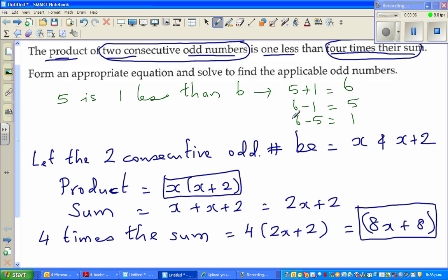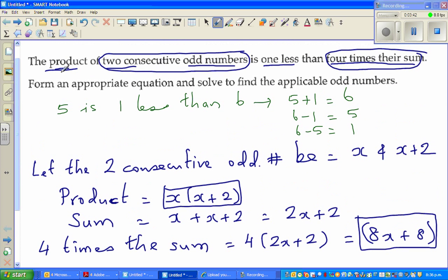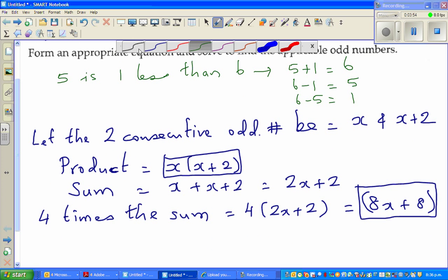Let us read it again. The product is 1 less than 4 times the sum. So we are saying this is 1 less than this. Can I say the product, which is x times (x plus 2), is 1 less? That means we add 1 to it and you will get the sum, which is 8x plus 8.